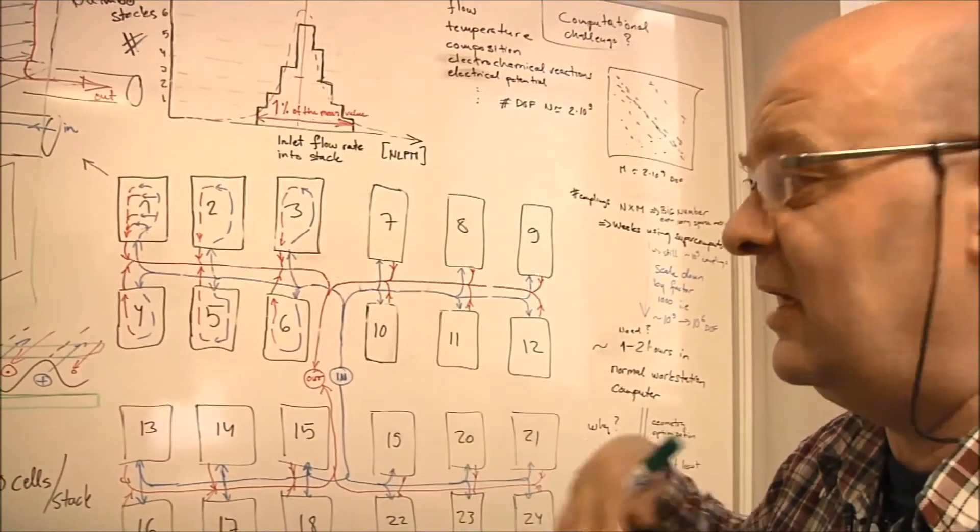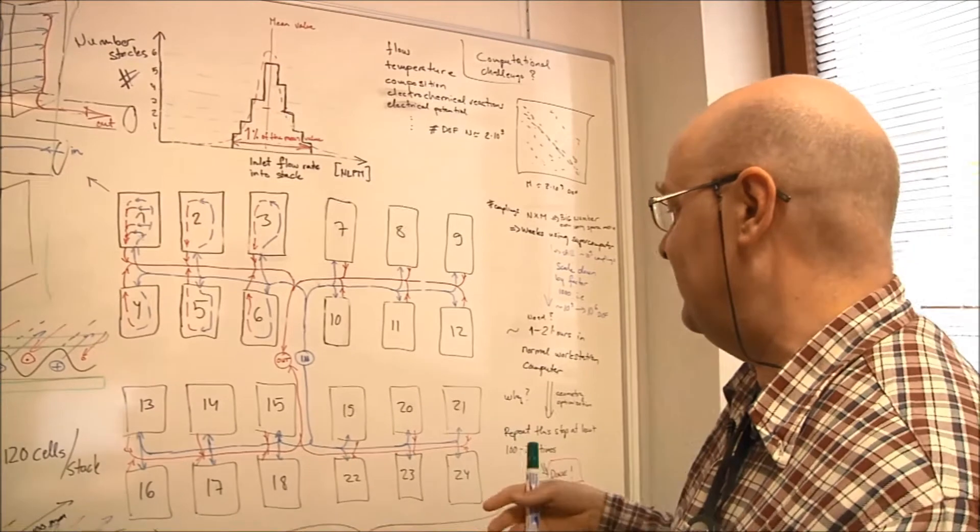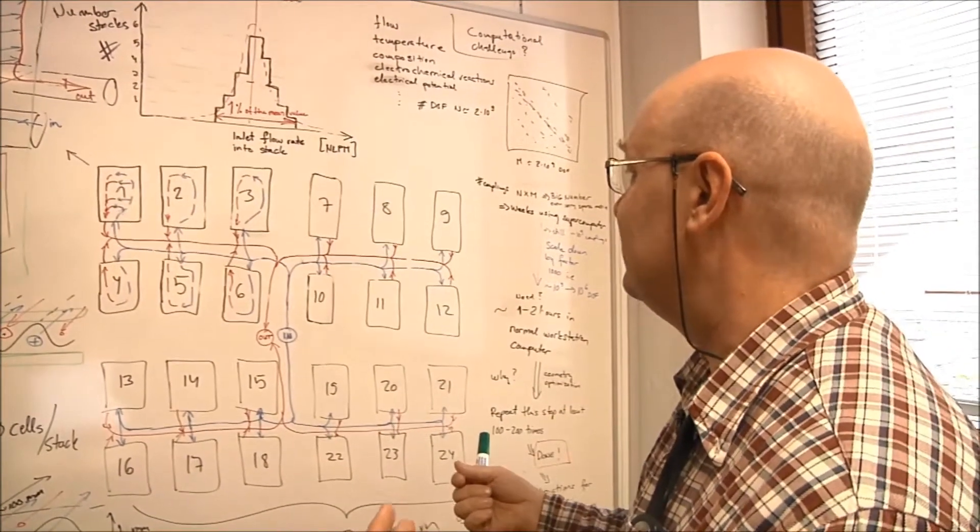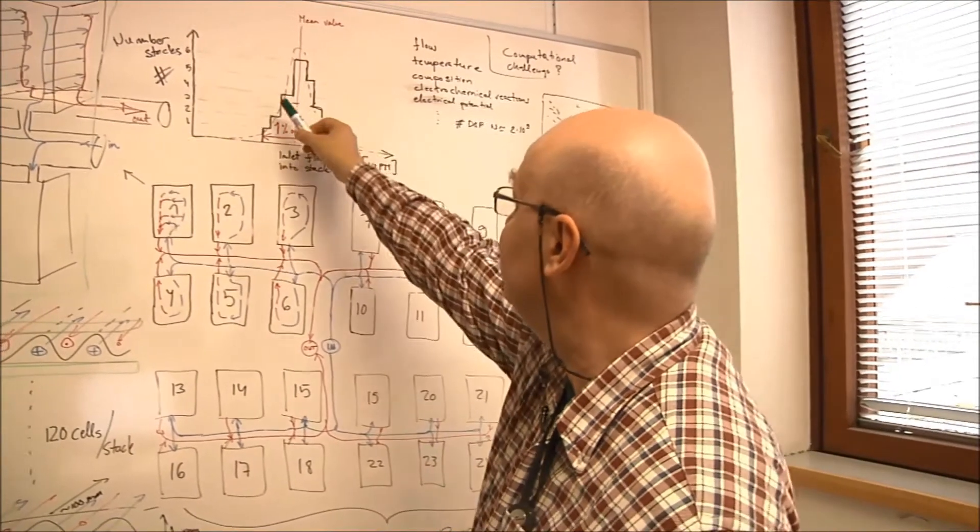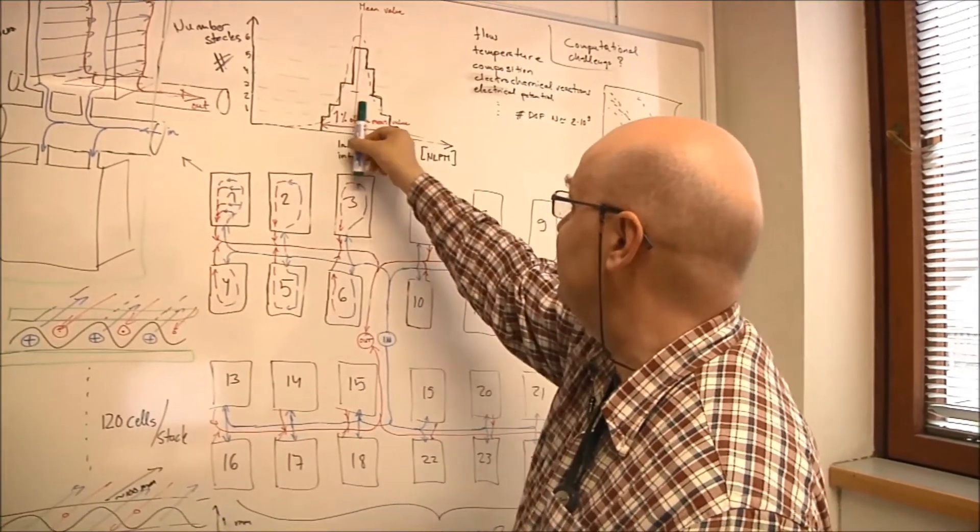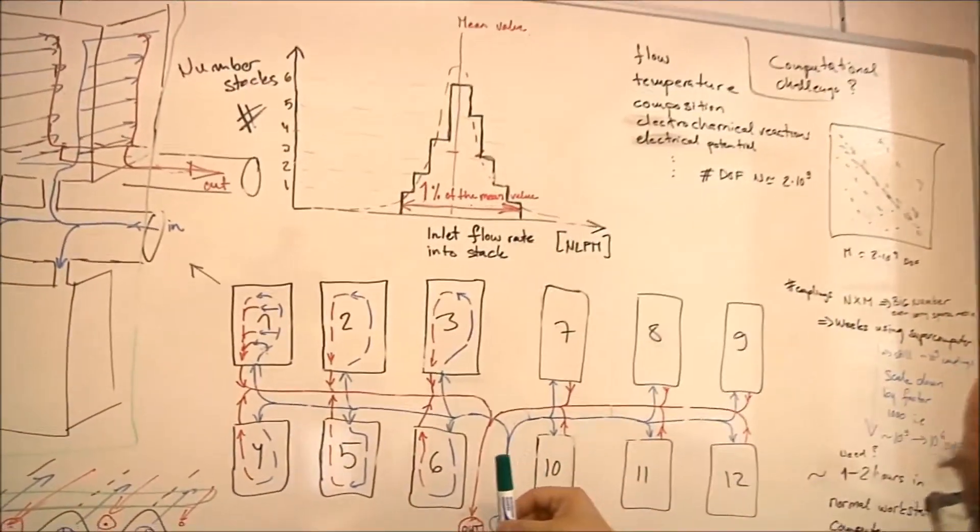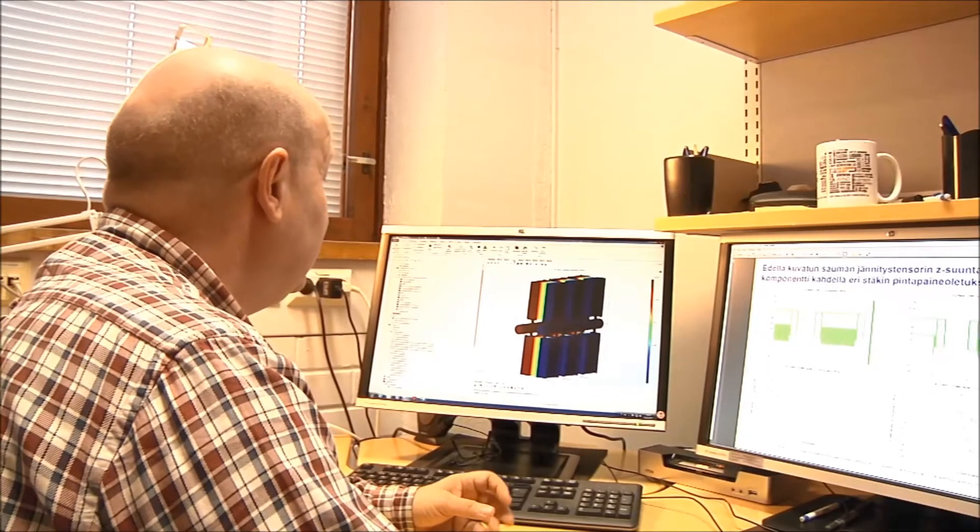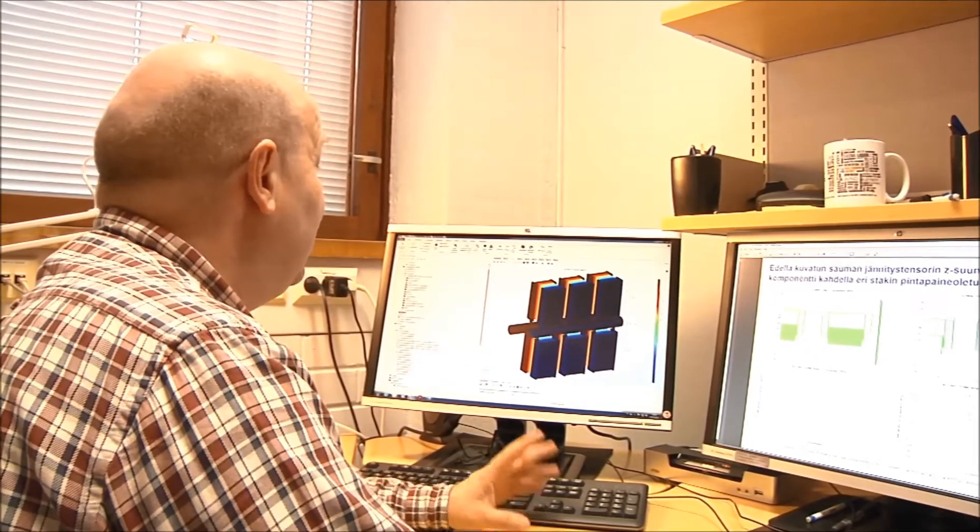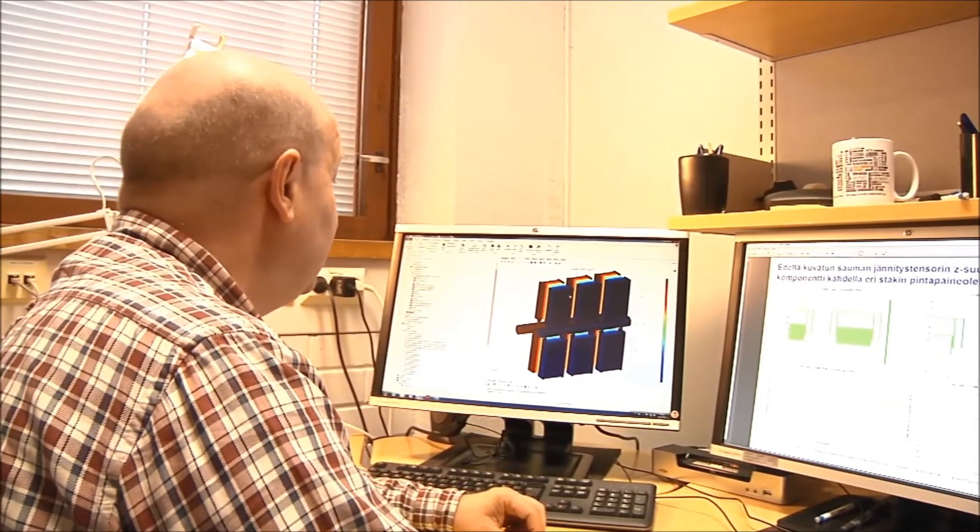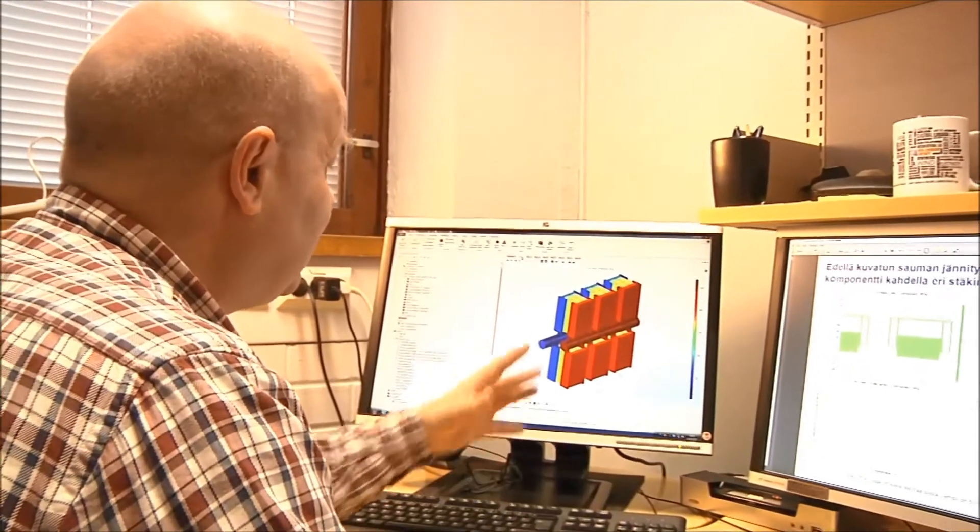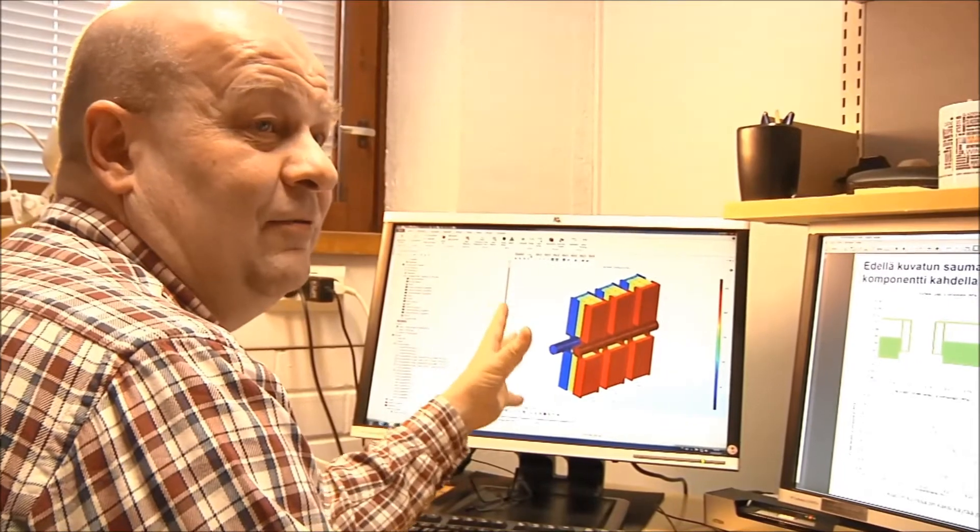And our problem would be, in that analogy, to calculate that we are guaranteed that the flow is equally distributed among all these stacks. For example, here dynamic viscosity is pre-calculated, density distribution, and from all this you then get this pressure distribution that is the driving force for the flow.